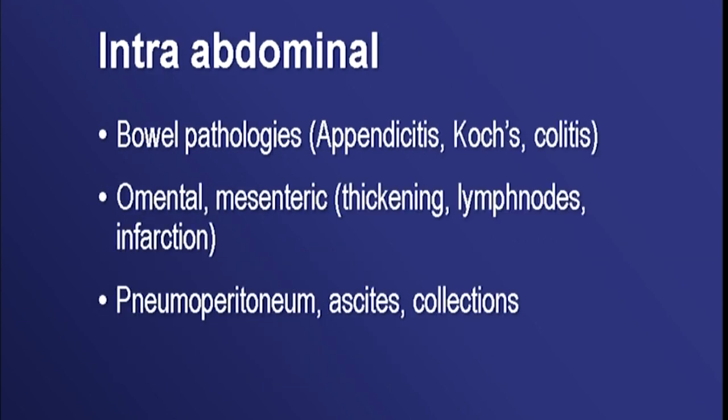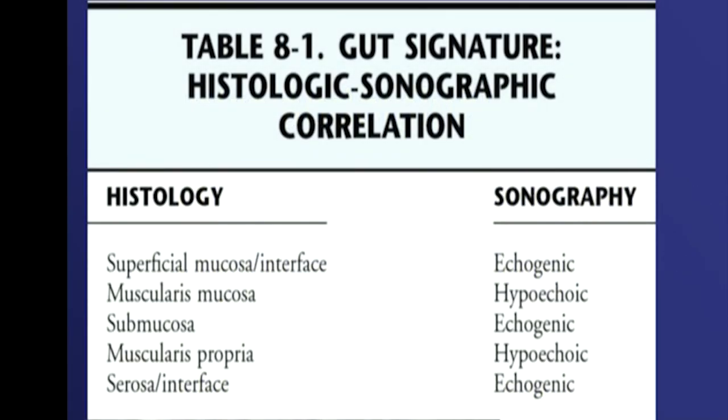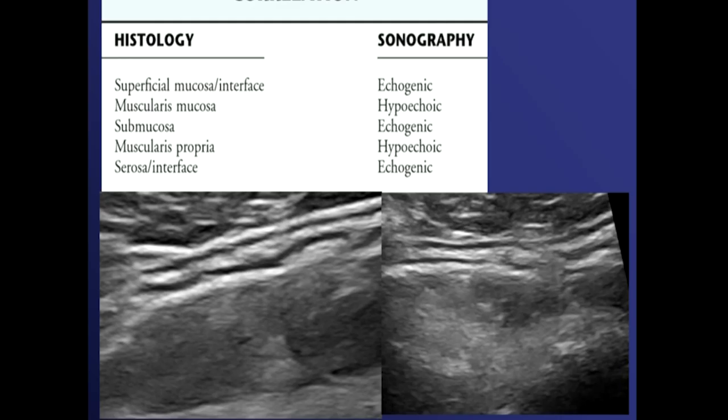Intra-abdominal pathologies include bowel pathologies like appendicitis, colitis, omental and mesenteric pathologies — thickening, lymph nodes, infarction. We can also depict pneumoperitoneum very well on ultrasound, as well as ascites, exudative or transudative collections. Localized collections at particular points are seen better on high-frequency linear probes.